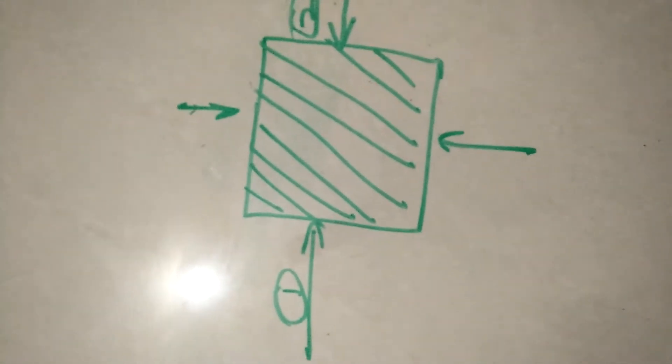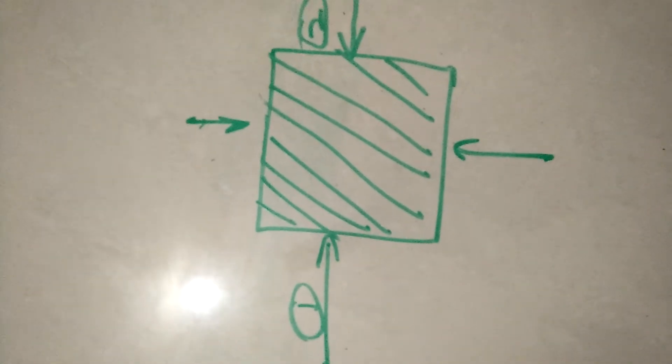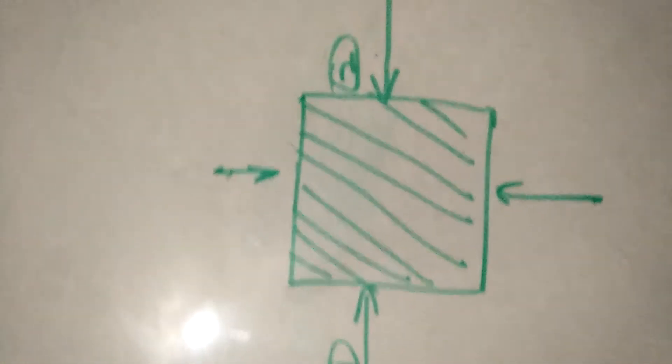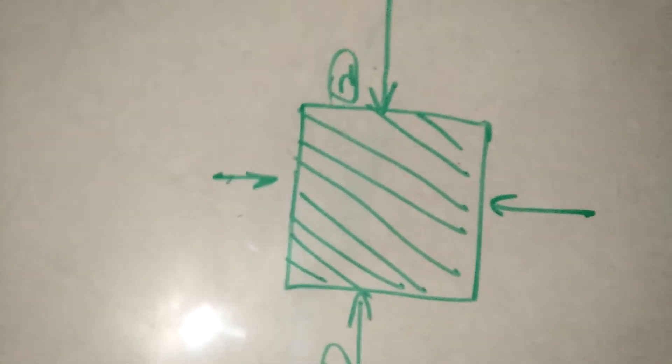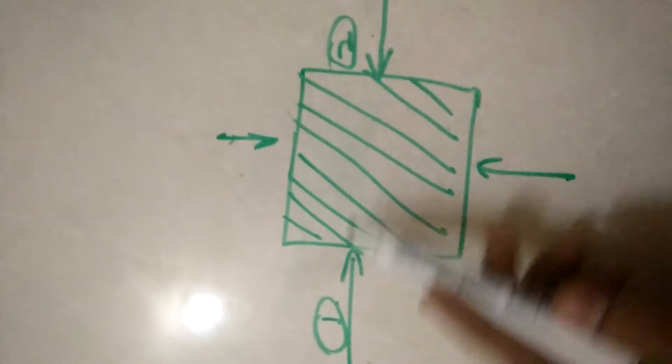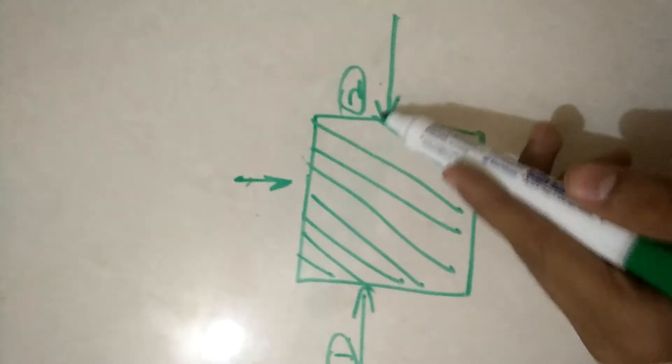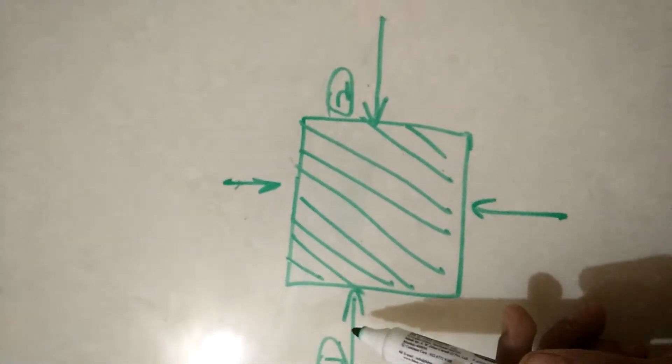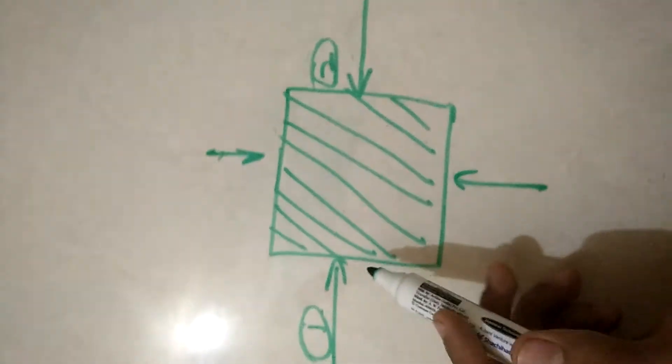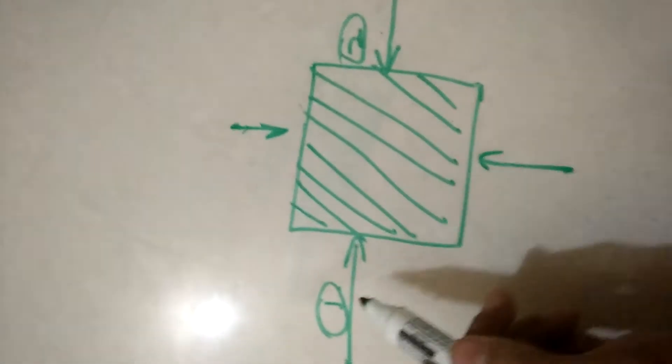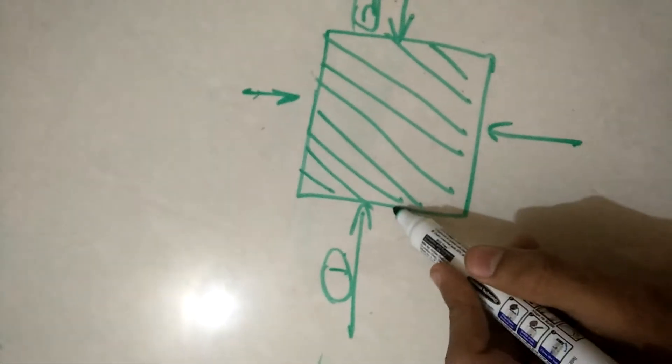A potential difference is developed on those opposite faces on which the force is applied. Suppose if we applied mechanical pressure on this face and this face, then the potential difference will be applied on this and this face respectively. That is, if we apply mechanical pressure on this face and this face and connect it through a wire to a bulb.